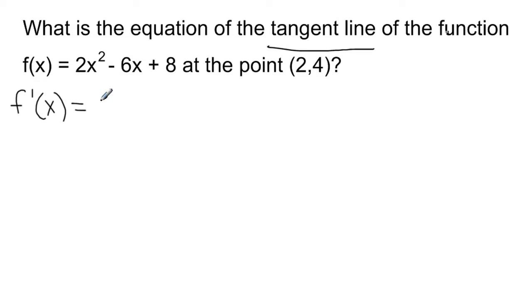So the derivative of this function we wind up with is 4x minus 6. Now this, remember, the derivative is the same thing as the slope of the line tangent to the curve. So if you have a line, y equals mx plus b, this is equal to the slope. So this is our slope here, is 4x minus 6, which is a little weird because slope should be a number, but that's why they're giving us this point here.